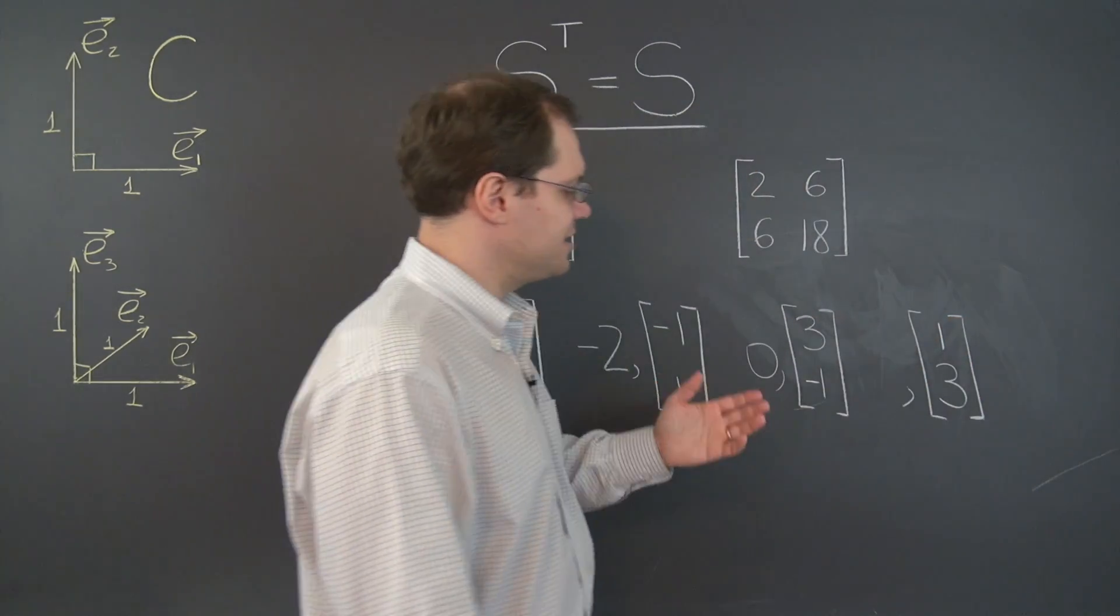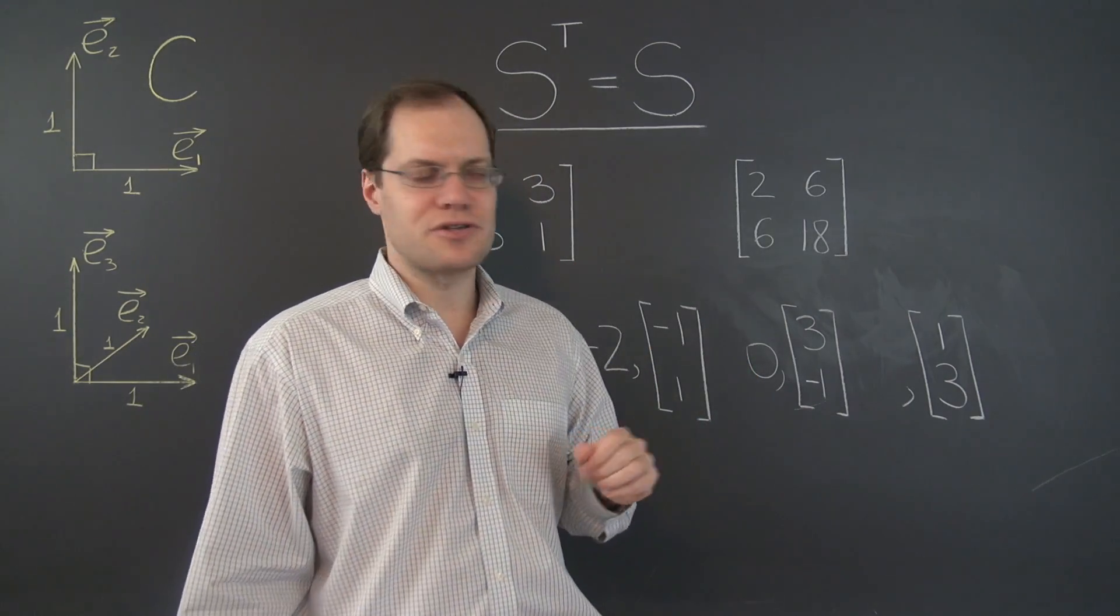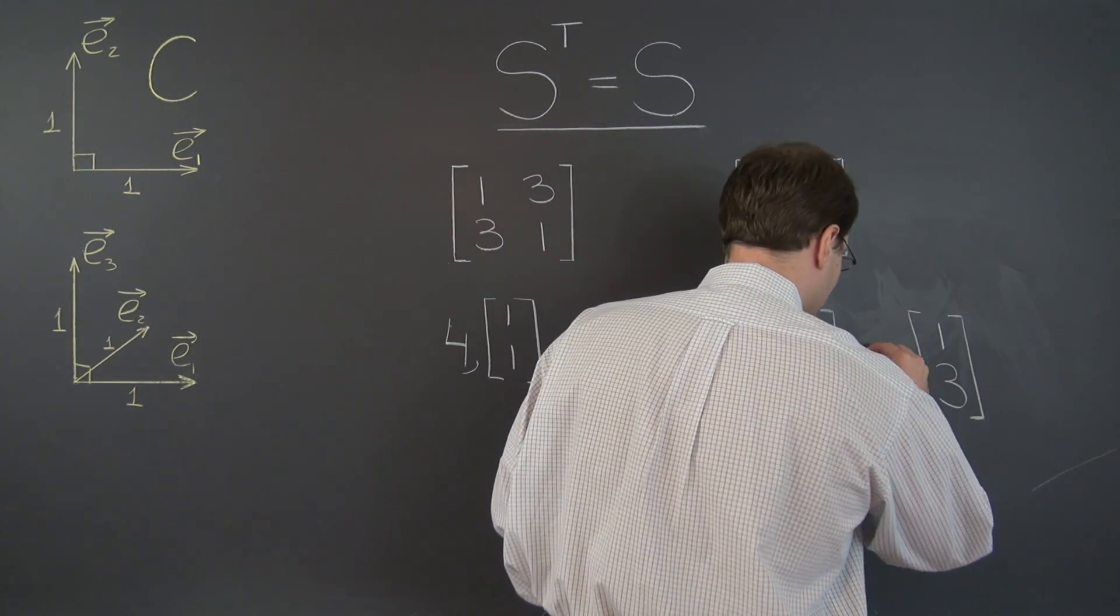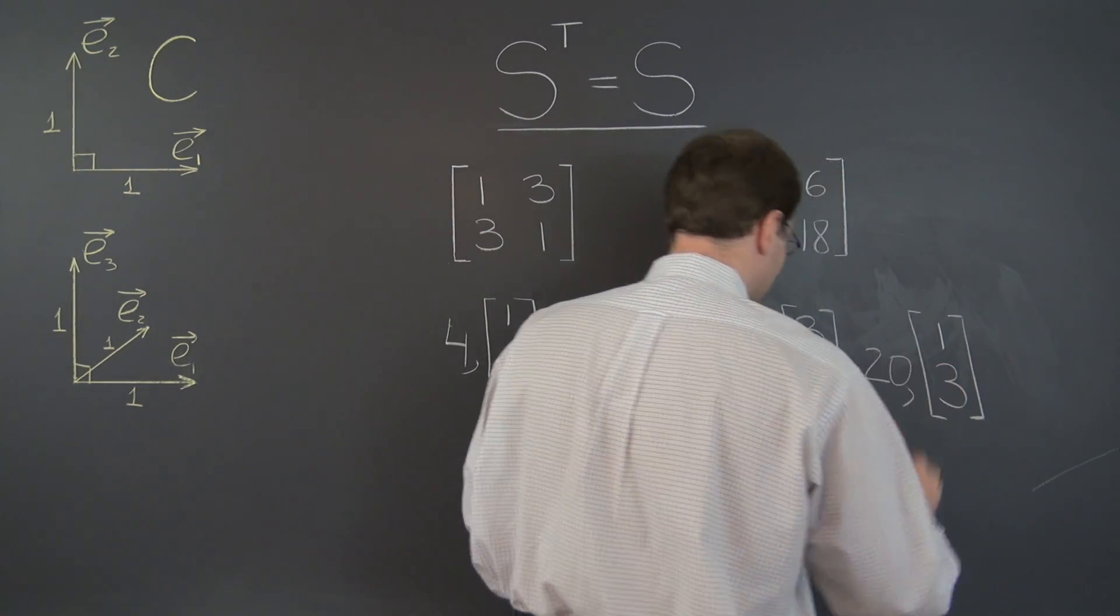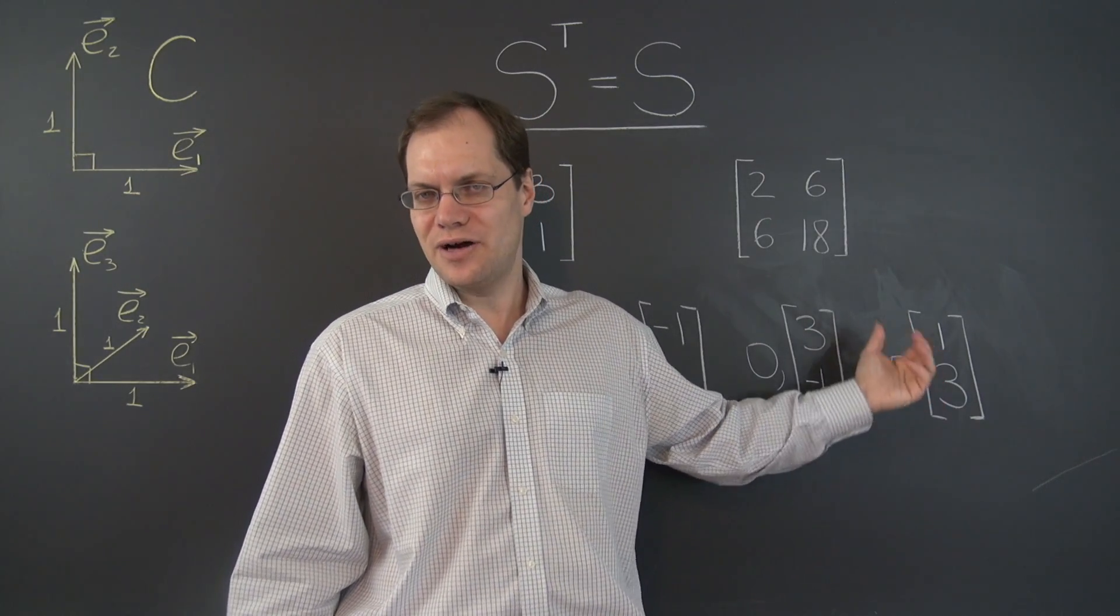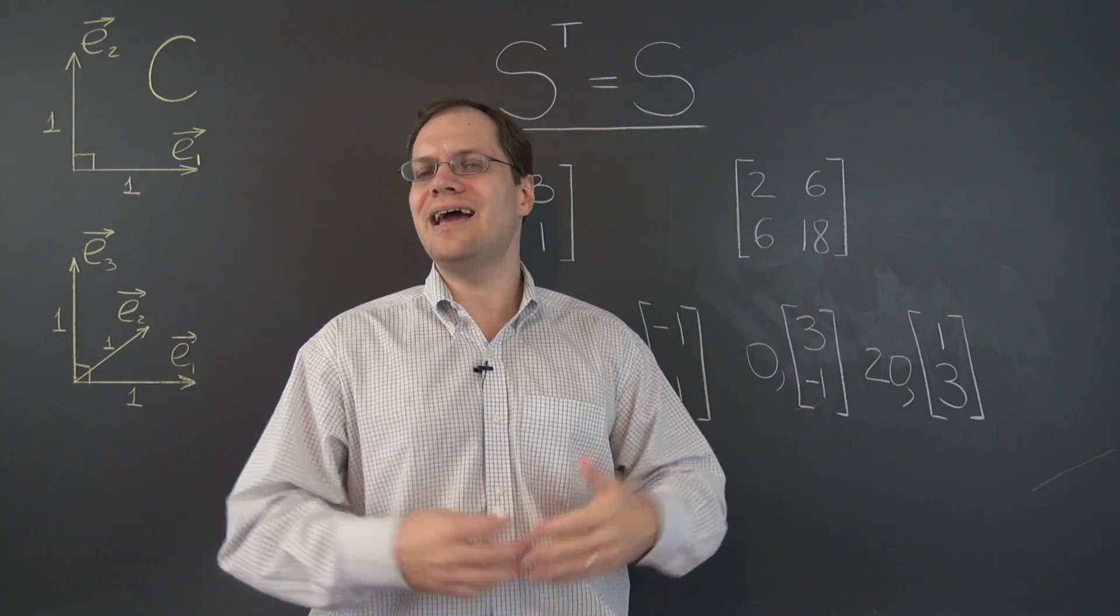The corresponding eigenvalue coming from the trace. The trace equals 20. One of the eigenvalues is 0. So the other one must be 20. So just like that, we determine a very complicated eigenvalue-eigenvector pair without any work at all.